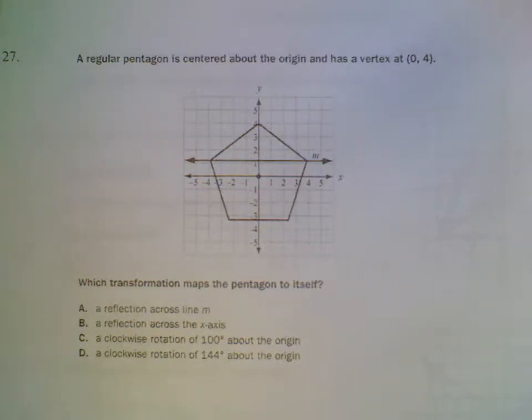So, number 27 says that we have a regular pentagon centered around the origin, or about the origin, and has a vertex at 0, 4.